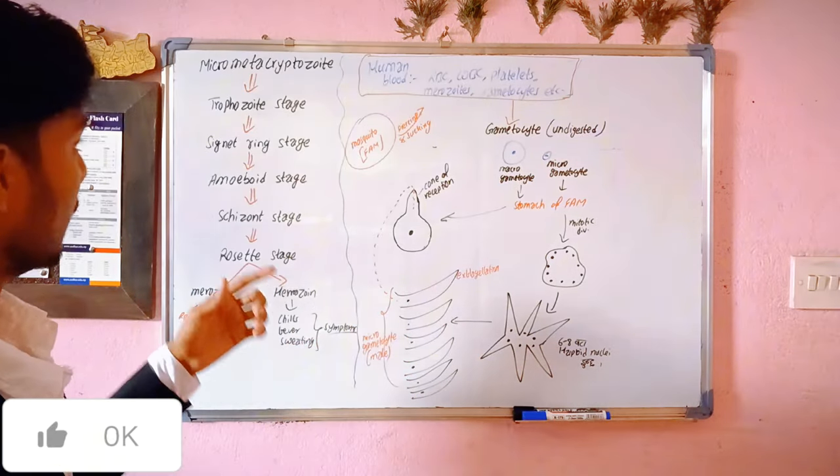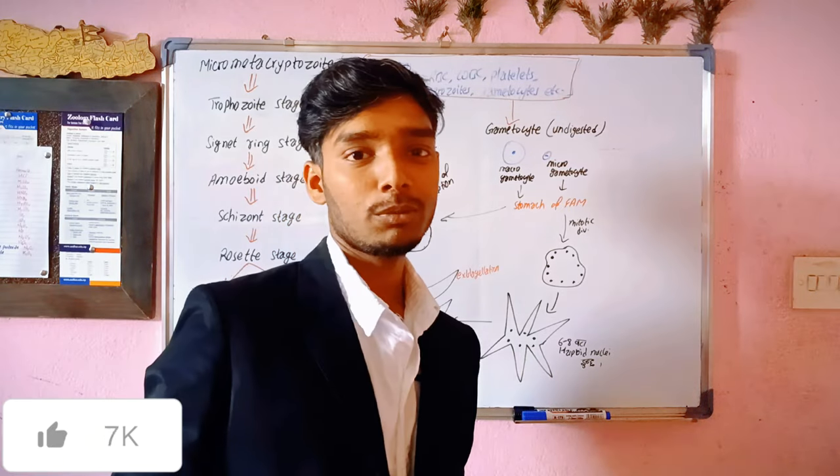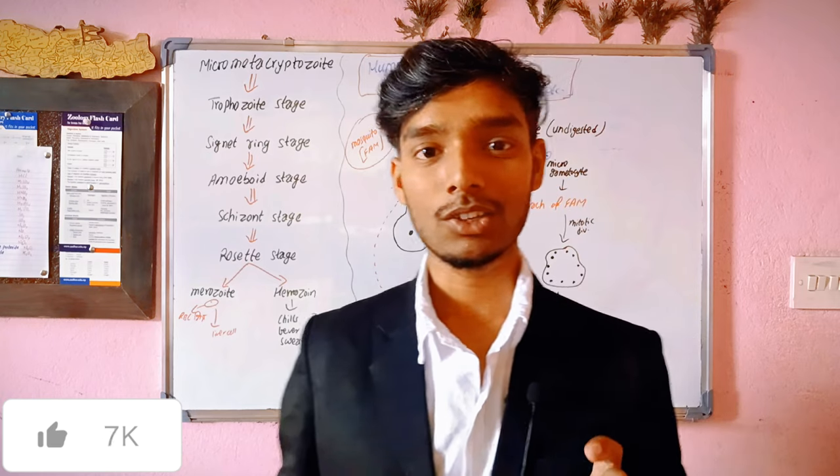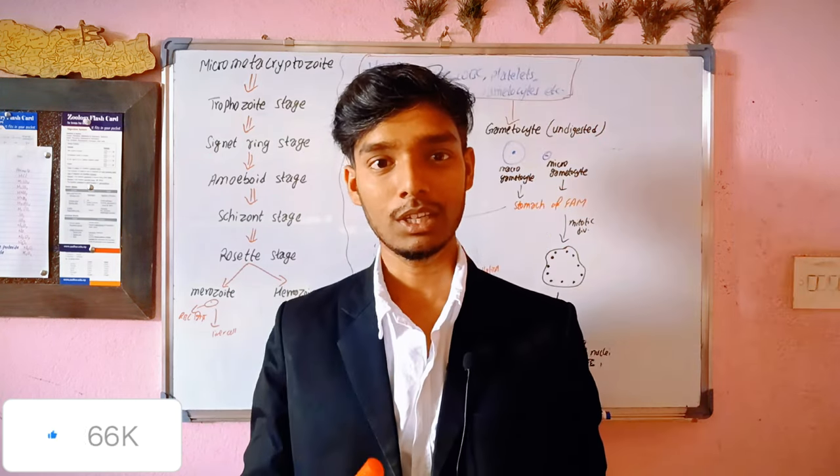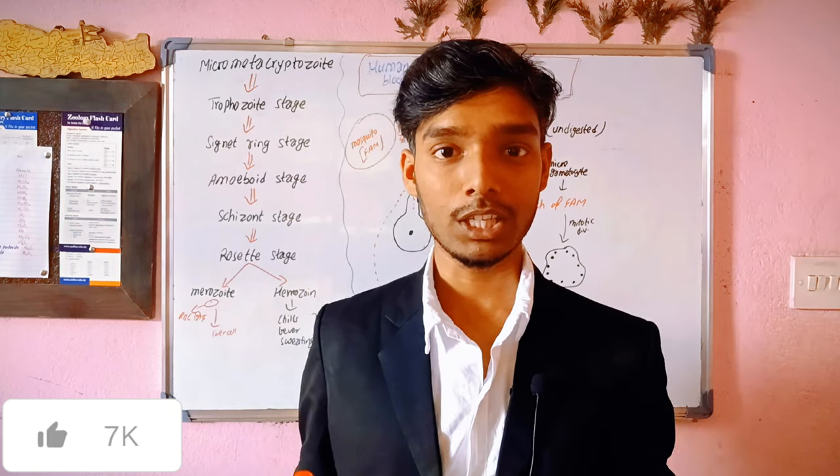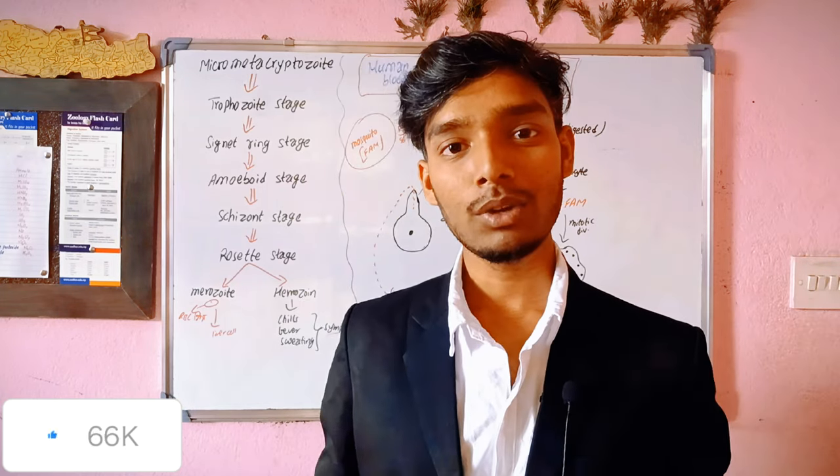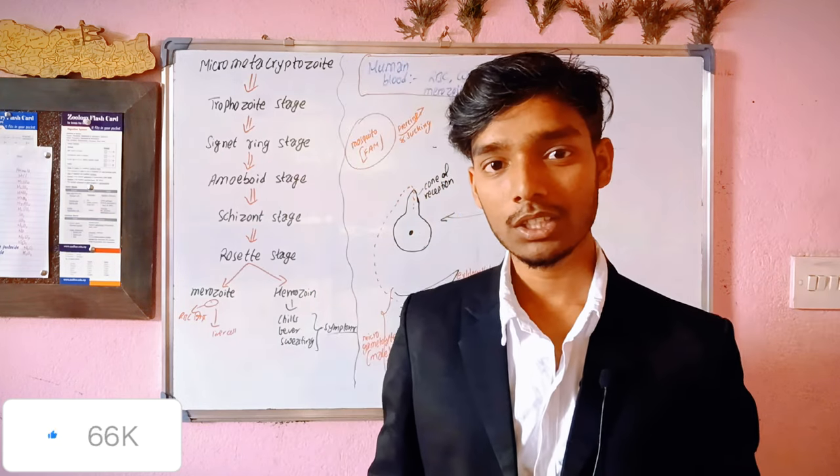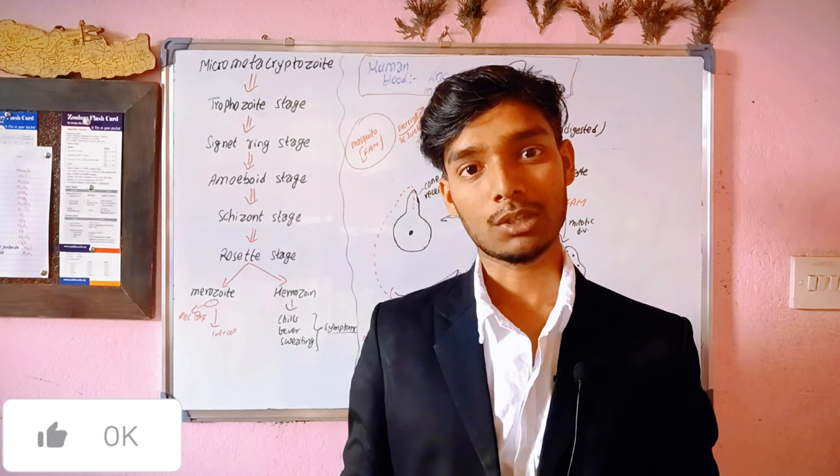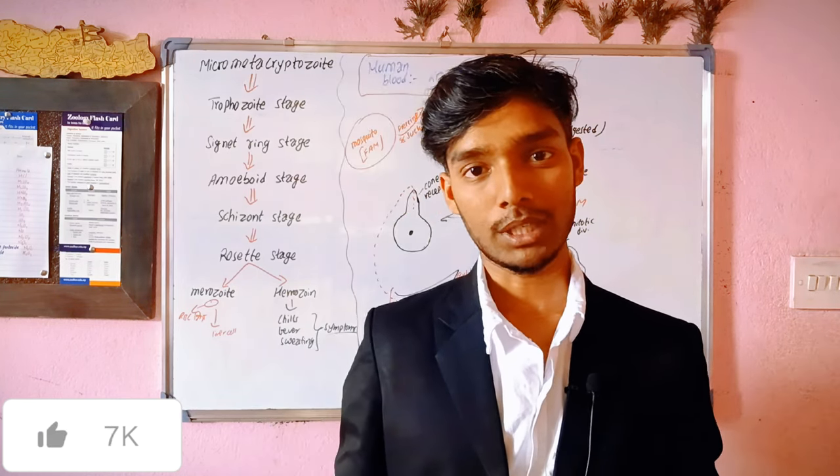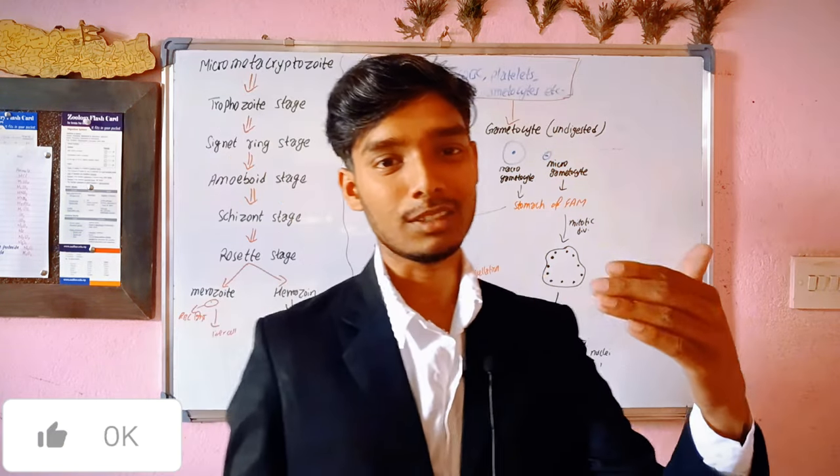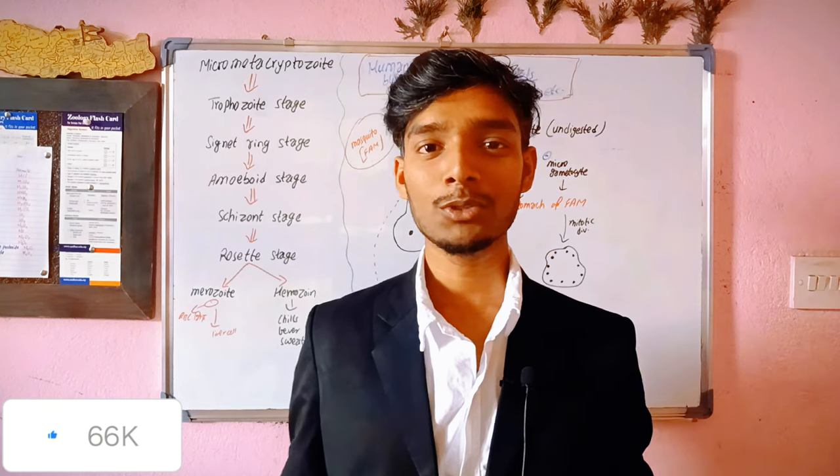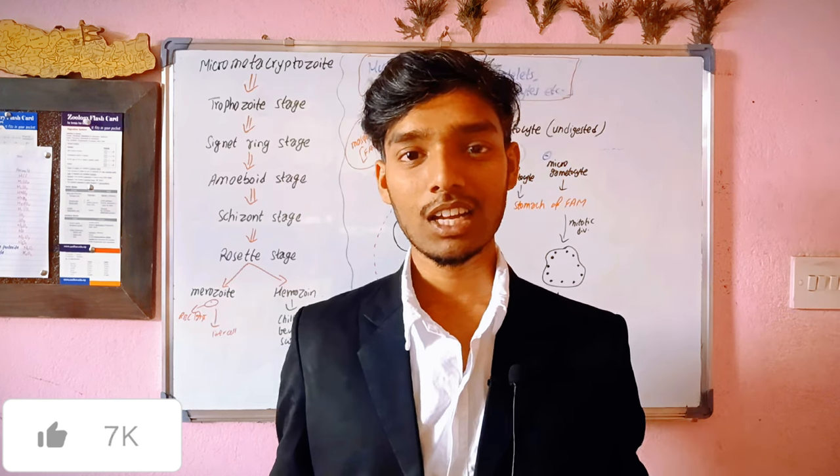So, starting with the Plasmodium life cycle. In the last class we covered the erythrocytic cycle. First liver schizogony, second liver schizogony, then the erythrocytic cycle. This erythrocytic cycle takes 48 hours to get completed. There is pre-erythrocytic cycle and exo-erythrocytic cycle, which were not too hard to understand.